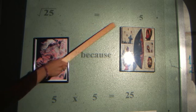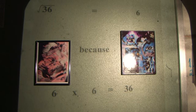The square root of 16 equals 4, because 4 times 4 equals 16. The square root of 25 equals 5, because 5 times 5 equals 25. The square root of 36 equals 6, because 6 times 6 equals 36.